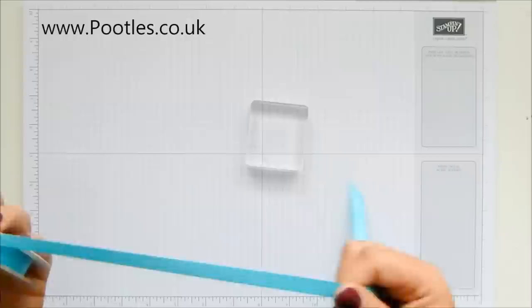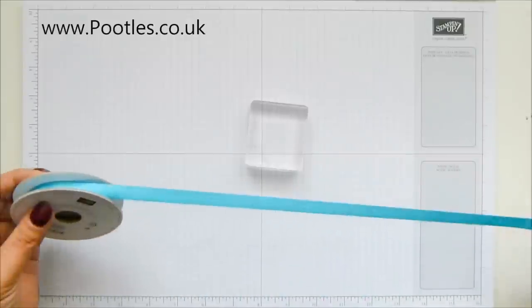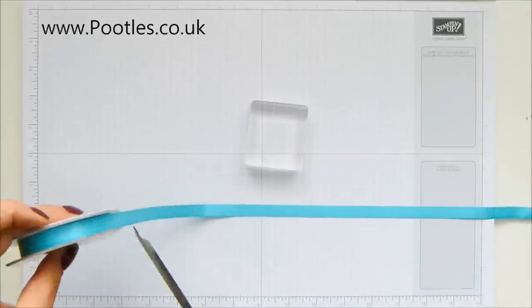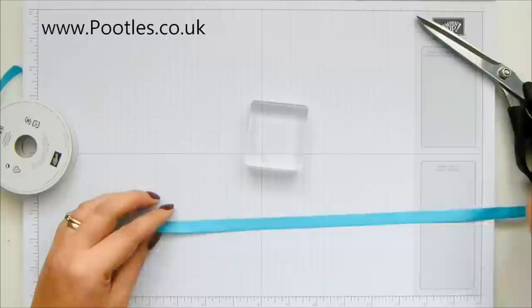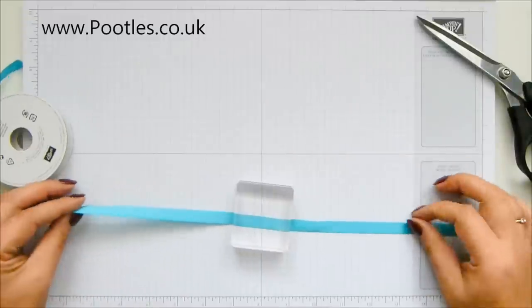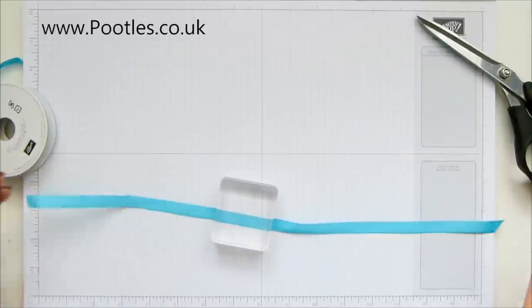So what I've got is a clear block just so I've got something to wrap it around, and I've got some ribbon. Doesn't matter what kind of ribbon. You do kind of have to work out the length you need first, but I'm going for long length just to show you.